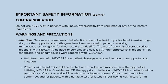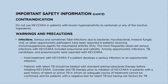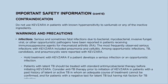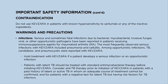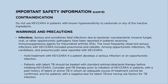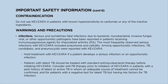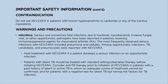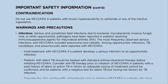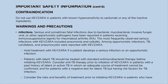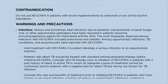Infections: Serious and sometimes fatal infections due to bacterial, mycobacterial, invasive fungal, viral, or other opportunistic pathogens have been reported in patients receiving immunosuppressive agents for RA. The most frequently observed serious infections with Kevzara included pneumonia and cellulitis. Among opportunistic infections, TB, candidiasis, and pneumocystis were reported. Hold treatment with Kevzara if a patient develops a serious infection or an opportunistic infection.